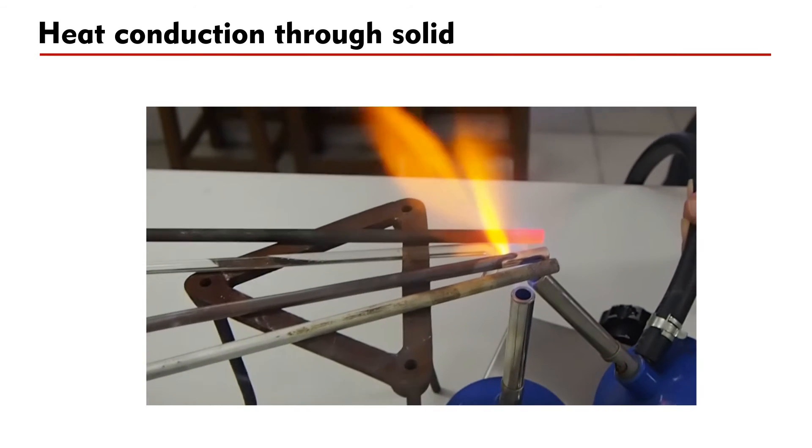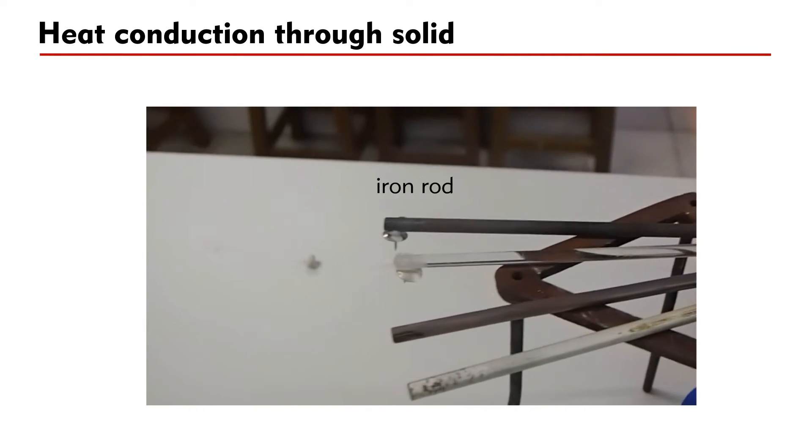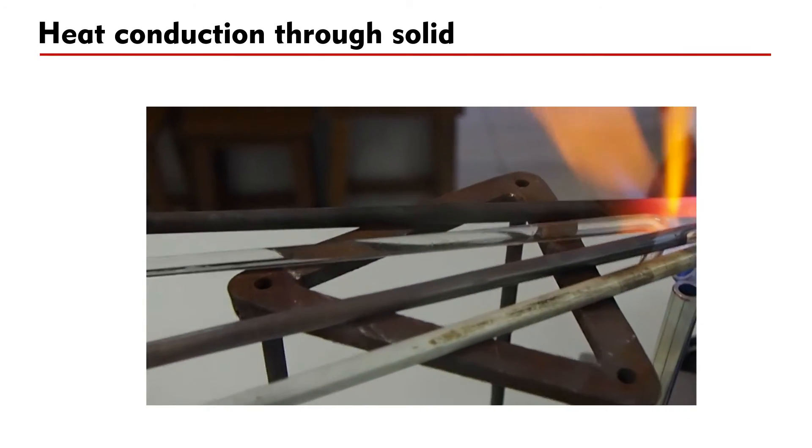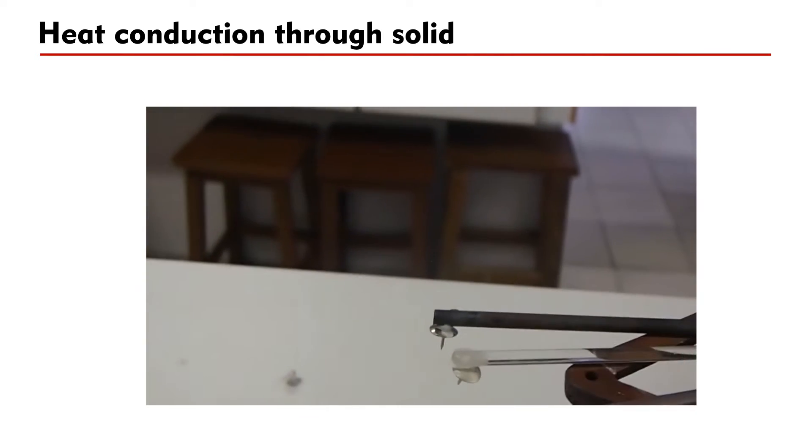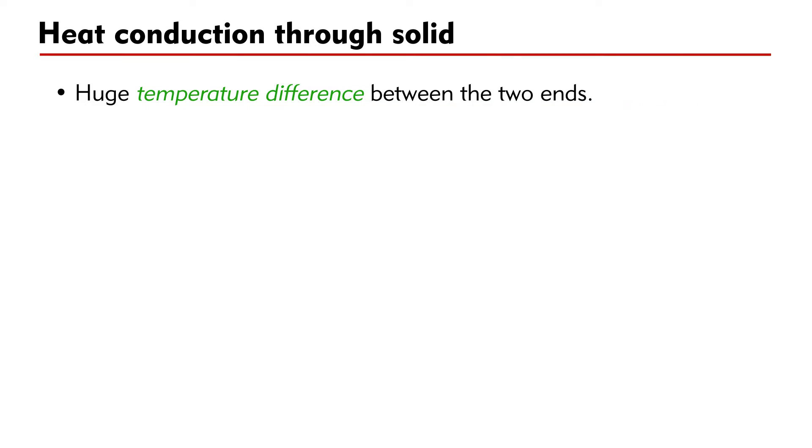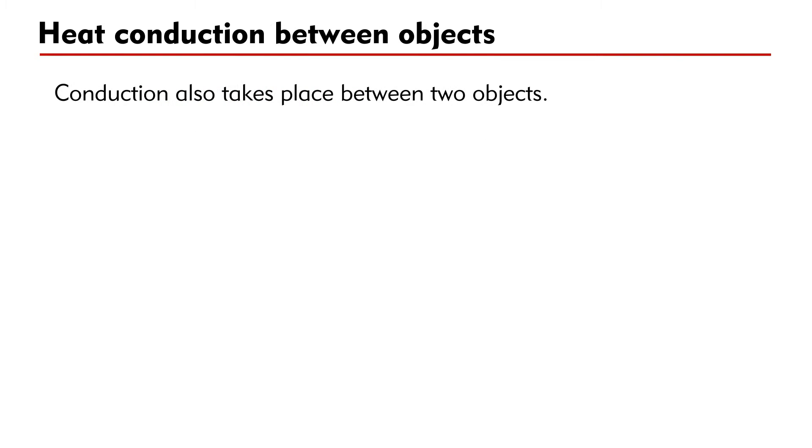Look at the video. Some rods are being heated by a Bunsen burner. Consider the iron rod in black color. One end is so hot that it glows and gives out light, while at the other end, the temperature is low enough that the rest does not melt. Clearly, a huge temperature difference exists between the two ends, and conduction of heat takes place from the hot end to the cold end. Conduction also takes place between two objects.